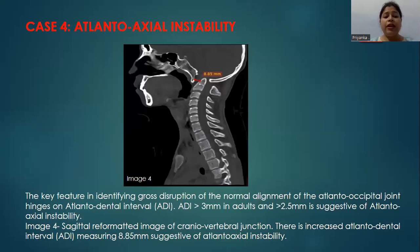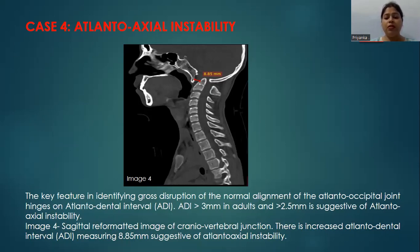The key feature in identifying gross disruption of the normal alignment of the atlantooccipital joint hinges on the atlantodental interval. An atlantodental interval of more than 3 mm in adults and more than 2.5 mm in children is suggestive of atlantoaxial instability. This image shows an increased atlantodental interval measuring 8.8 mm, suggestive of atlantoaxial instability.